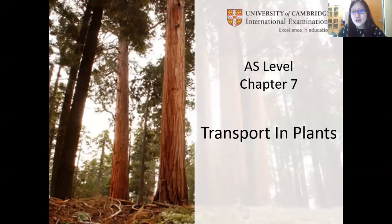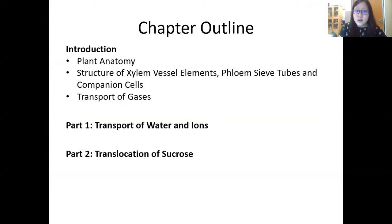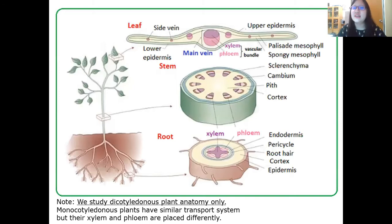Hello guys, welcome to chapter 7: transport in plants. This is unlike any chapter you have studied before. Previously, we looked at microorganisms, cells, and DNA — all really precise biomolecular stuff. But now we are looking at big systems, which means we're talking about organisms. Before we talk about transport, we need to talk about plant anatomy — how it looks and what tissues there are. This is part 1A: plant anatomy.